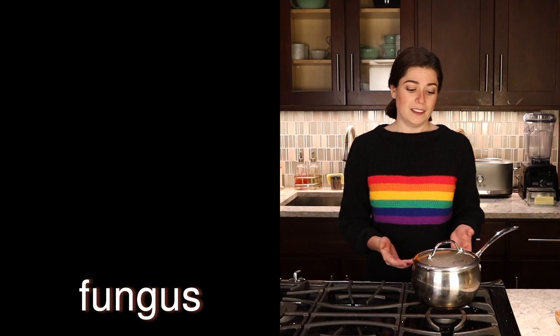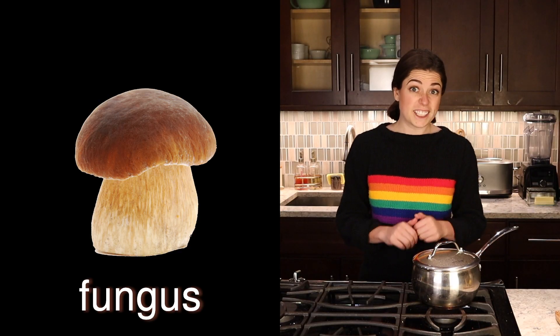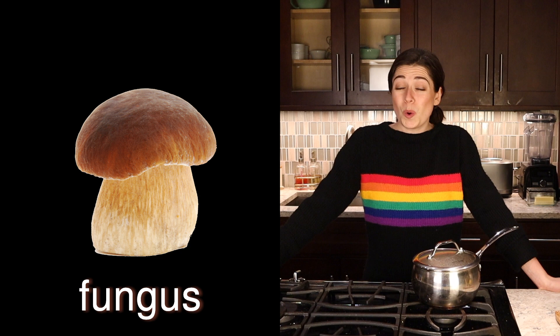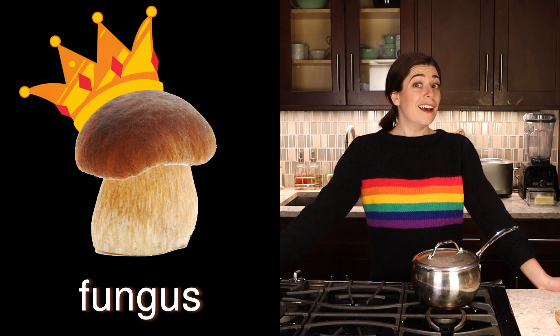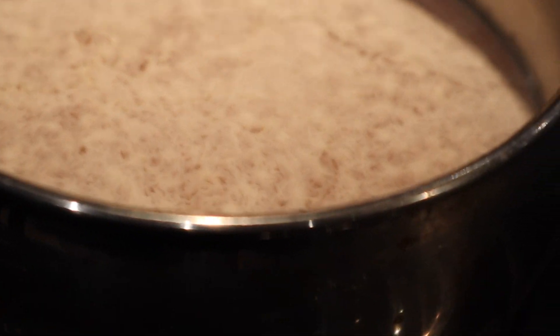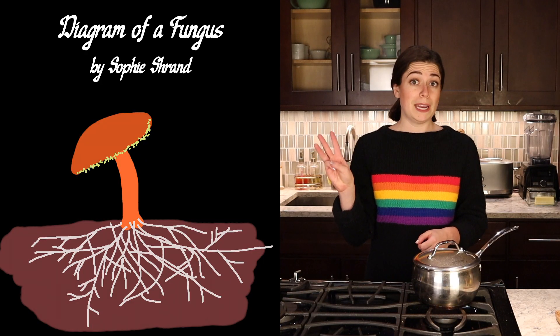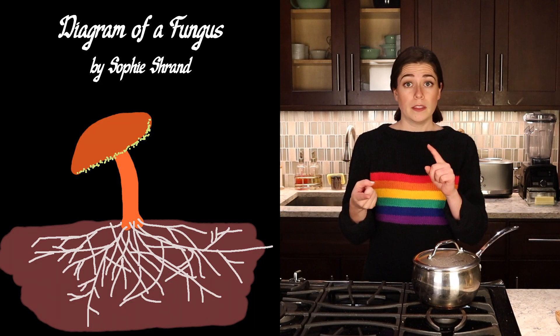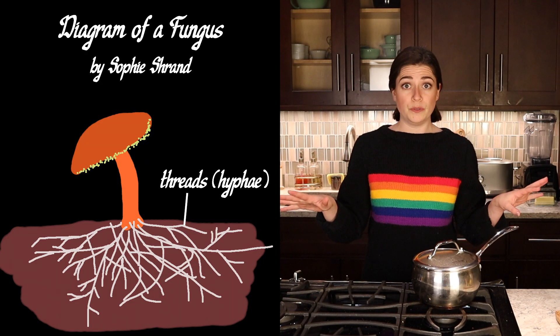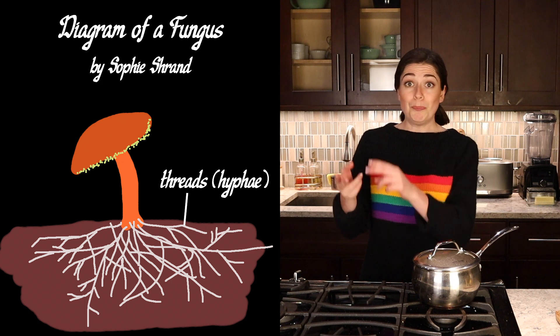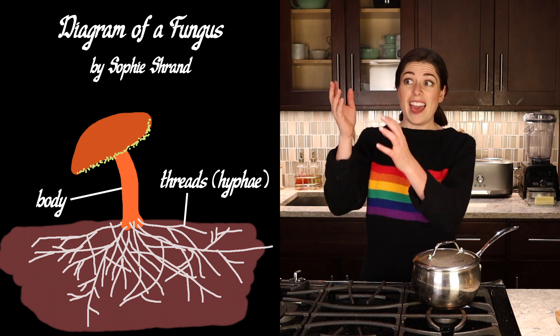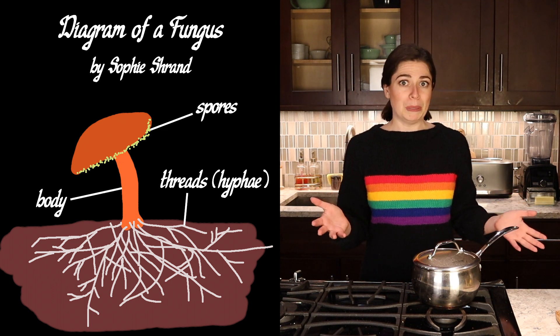There's gotta be some science here. Mold is a type of fungus. Fungi are different from plants and animals — they have their own kingdom of living organisms. Yes, mold is alive! A fungus has three main parts: the threads that grow into its food source, the body that grows out of the food source, and spores — kind of like the pollen of a plant.